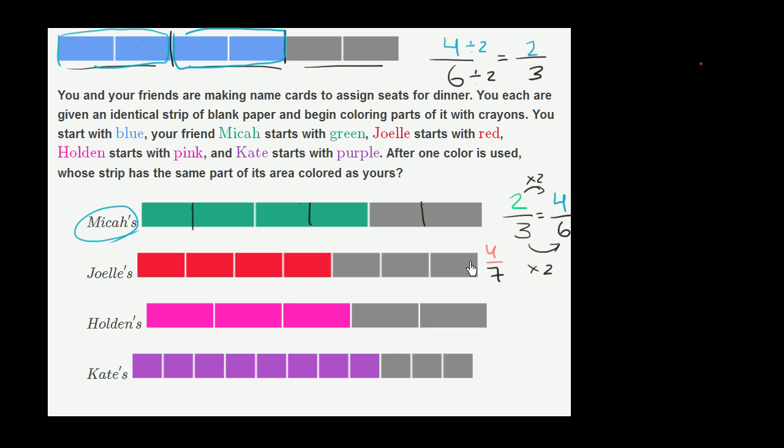So it's not clear to me that we can somehow multiply and divide the numerator and the denominator here. Remember, it has to be by the same number in order to not change the value of the fraction, to somehow make that equal to four-sixths.